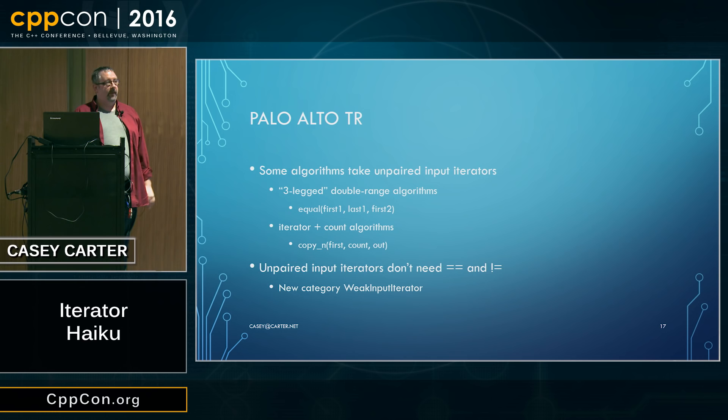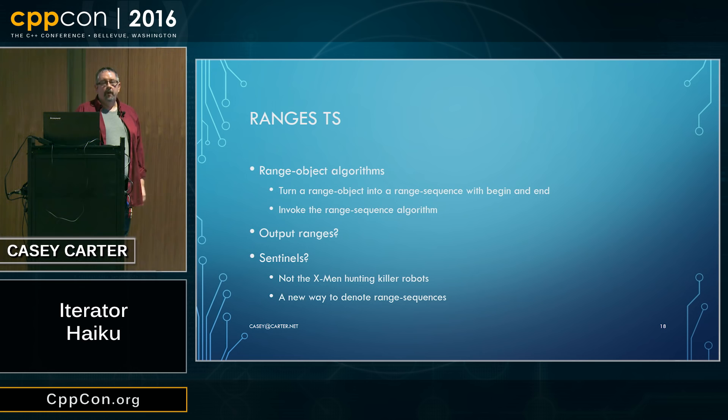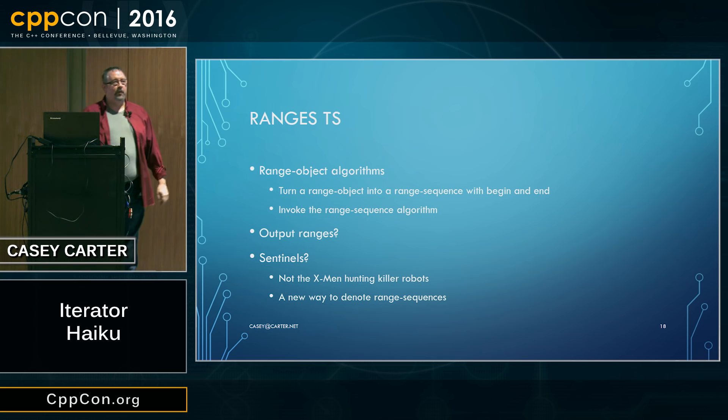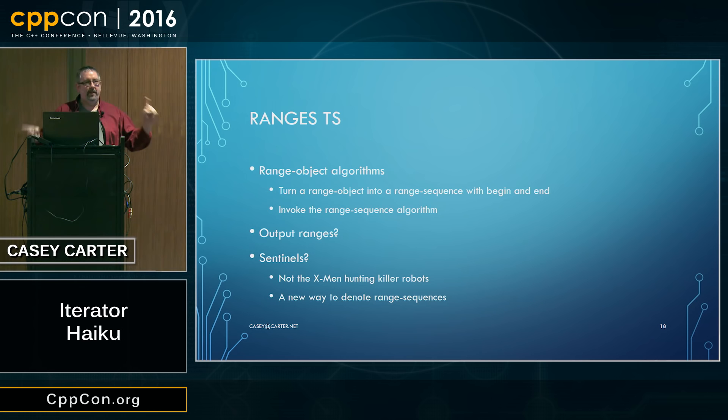They said, if I don't need equality and inequality operations for these kinds of iterators, I can define a new category. We'll call it weak input iterator. It's a little weaker than the regular input iterator concept because it doesn't have an equality operation. Moving forward into the Ranges TS, we decided we wanted it because we want to have algorithms that take the range object kind of ranges as well as the range sequence kind of ranges.